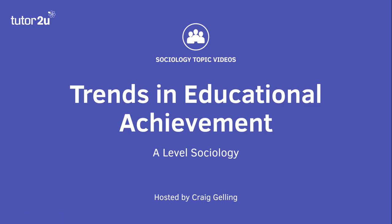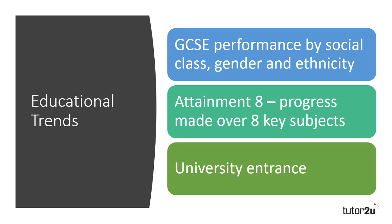Welcome to this Tutor2U Sociology topic video on the trends in educational achievement. When looking at differences in educational achievement based upon social class, ethnicity, or gender, you need to demonstrate knowledge of the key trends. Most textbooks measure this by the percentage of students who achieve five A* to C grades at GCSE, even though this measurement is no longer used.